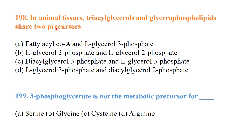MCQ 194: In animal tissues, triacylglycerol and glycerophospholipids share two precursors — acyl CoA and L-glycerol-3-phosphate. MCQ 195: Three-phosphoglycerol — glycerol is not the metabolic precursor of three-phosphoglycerol. It is not the precursor; arginine is not the precursor either.